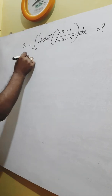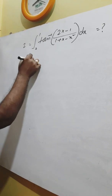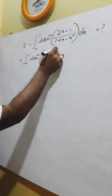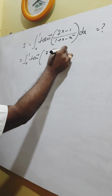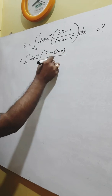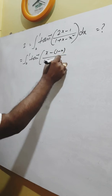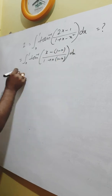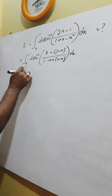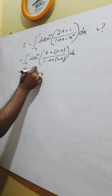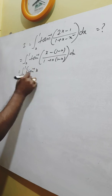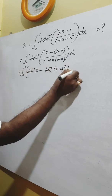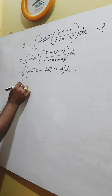Solving the second part of this problem. This is equal to the integral from 0 to 1 of tan inverse of (x minus (1 minus x)) divided by (1 plus x times (1 minus x)) dx. That is equal to the integral from 0 to 1 of tan inverse x minus tan inverse (1 minus x) dx.